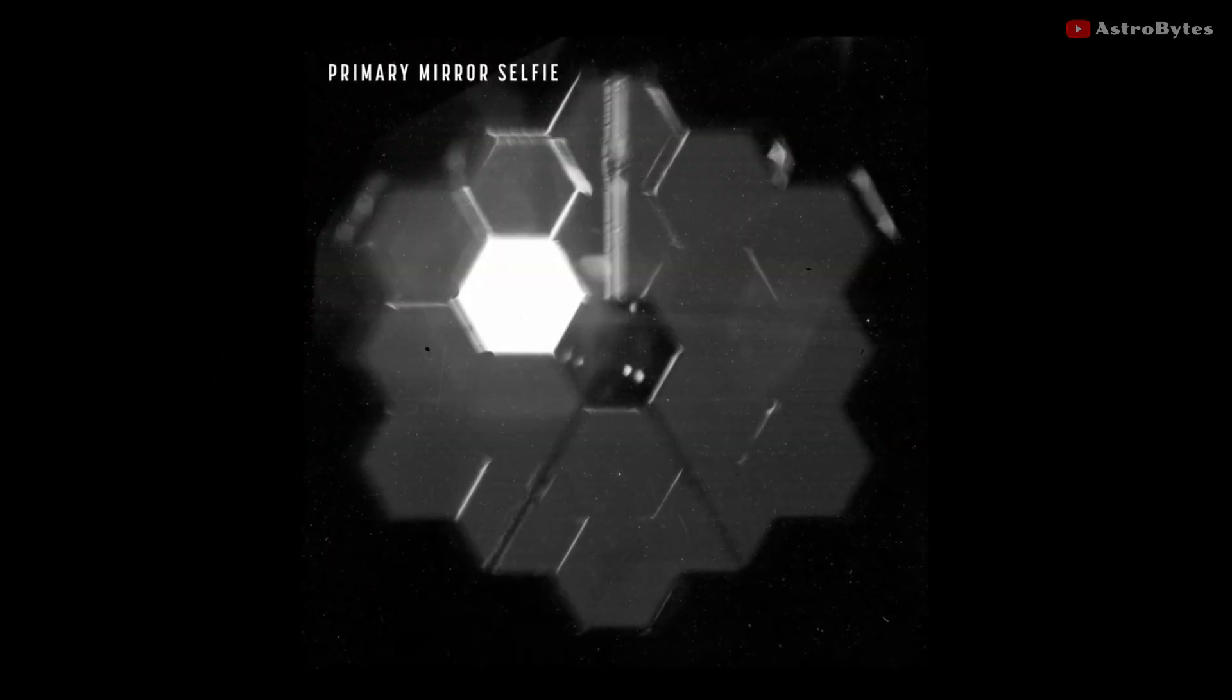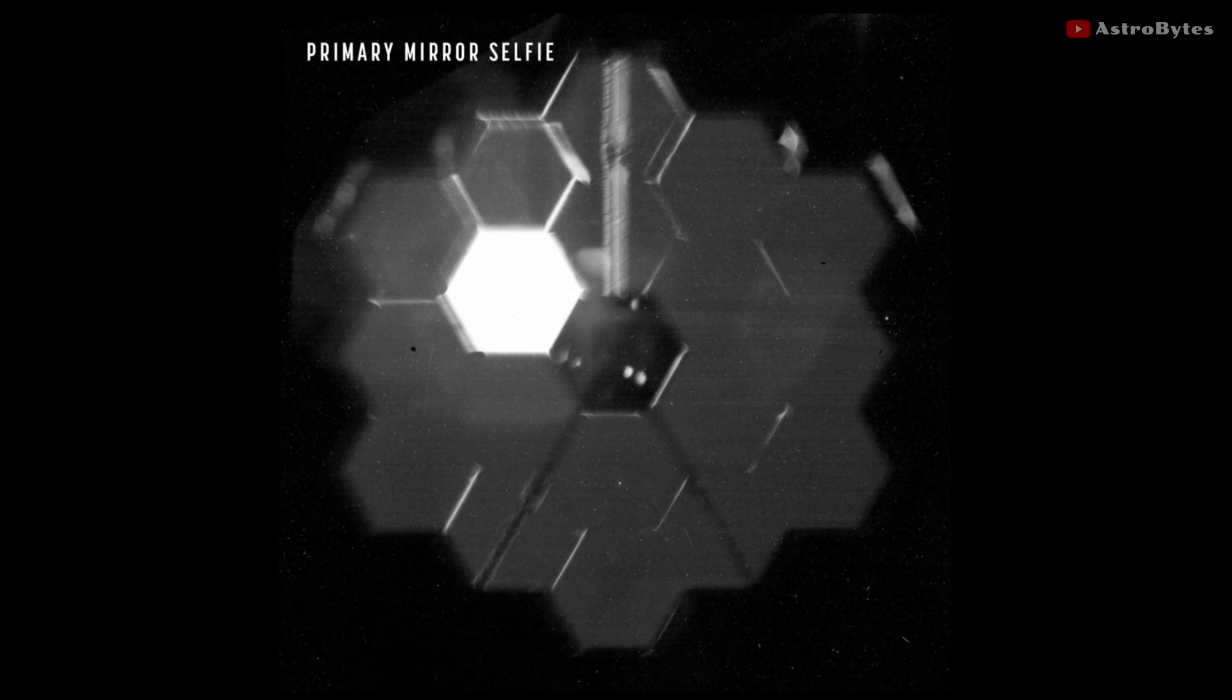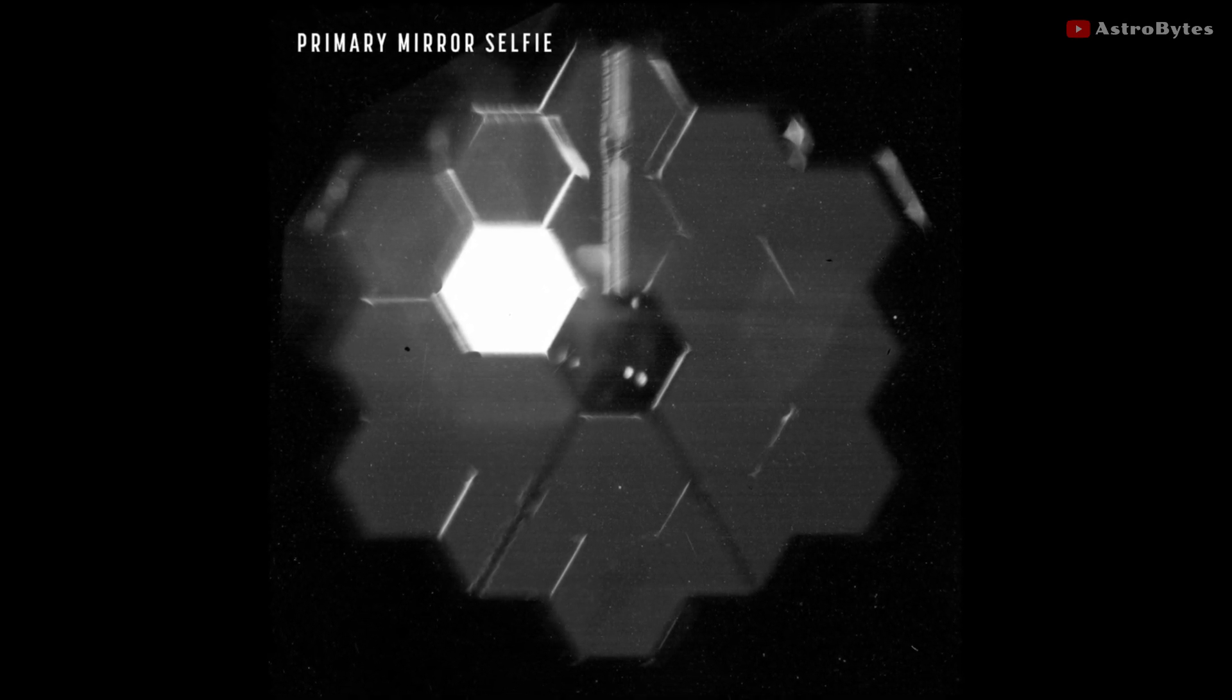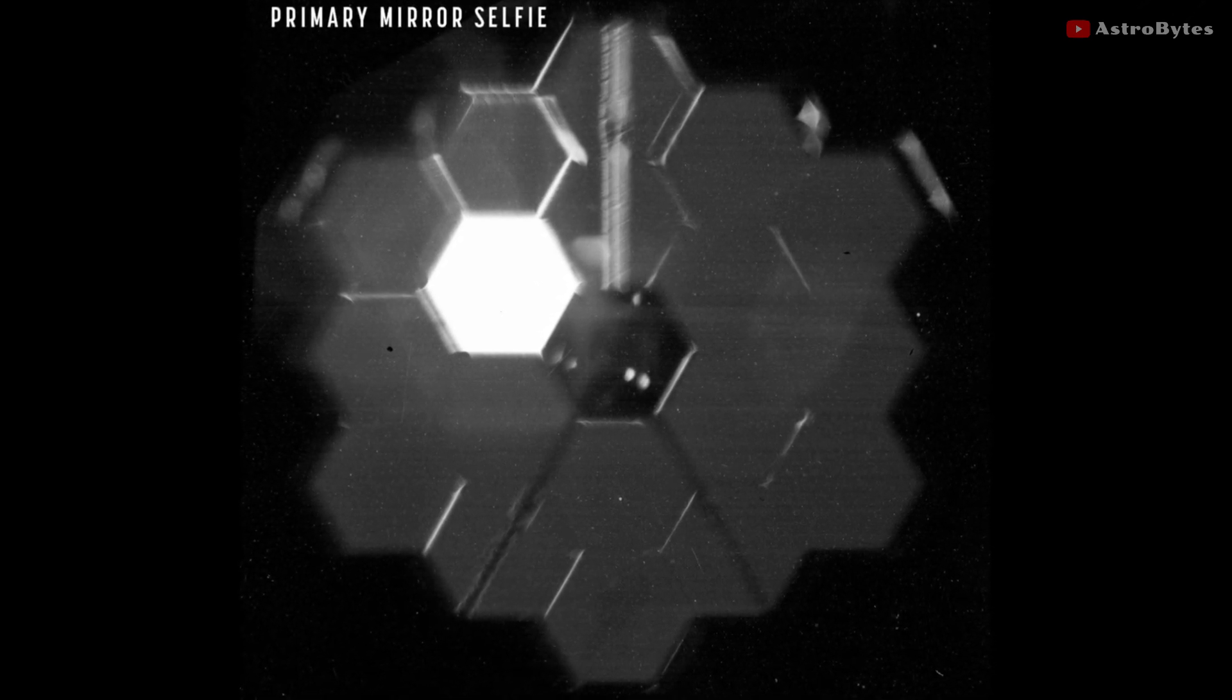What you are seeing is the actual primary mirror of the telescope as it observes its engineering target, a bright star. All the mirror segments are seeing starlight, but the bright segment is bright because the segment is directly aligned with the star.